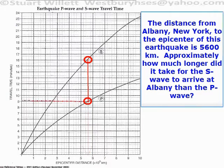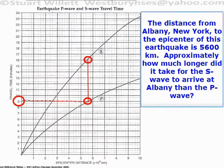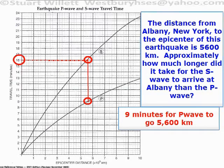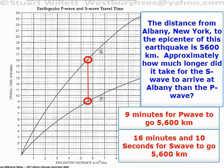You go over to the Y axis, and the Y axis shows how long it took for a wave to travel that distance. For the P wave to go 5,600 kilometers, it takes 9 minutes. For an S wave to travel 5,600 kilometers, it takes 16 minutes and 10 seconds.